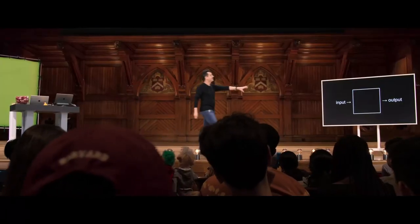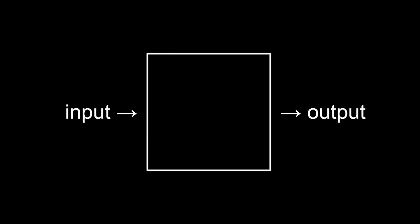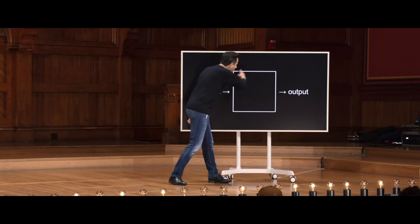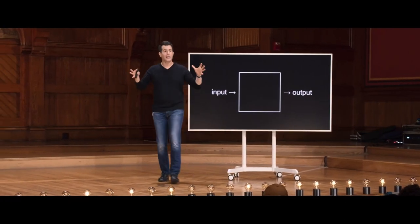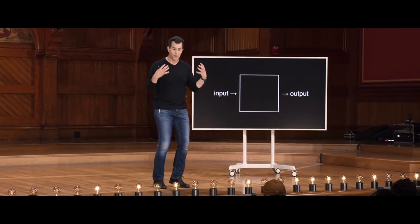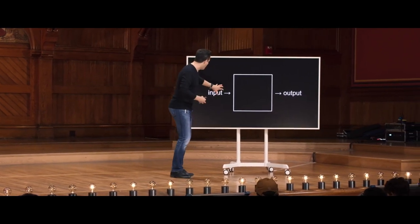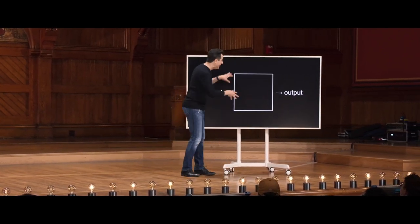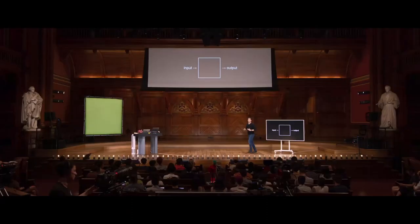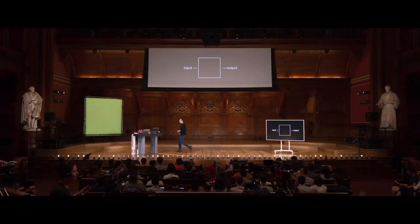If computer science is all about information and with it the solving of problems, what does it actually mean to solve a problem? Let's propose a model: you've got some input — the problem you want to solve — and the goal is some output. Somewhere in between, the proverbial black box is some kind of secret sauce that gets the work done. In the coming months we'll decide how to represent these inputs and outputs, and how to code up solutions.